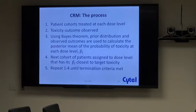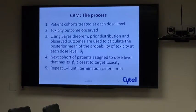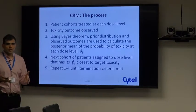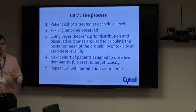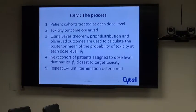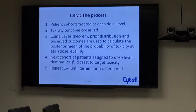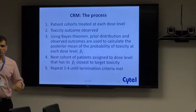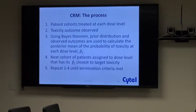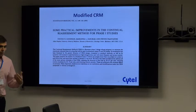You treat subjects at each dose level, observe how many toxicities occur, then use Bayes' theorem to combine the prior view with the observed toxicities to form the posterior distribution. You're interested in the mean of the posterior distribution for the probability of toxicity at each dose level. You scan through all dose levels, find whichever has a posterior mean closest to your target, and that becomes the next recommended dose. This reiterates until you exhaust the maximum sample size or meet termination criteria.